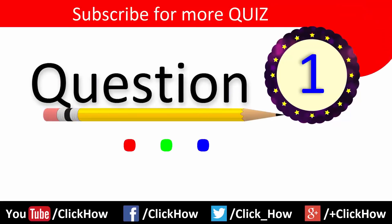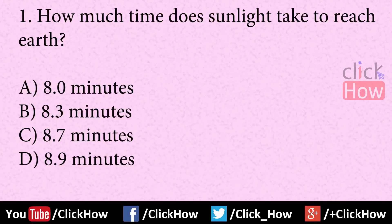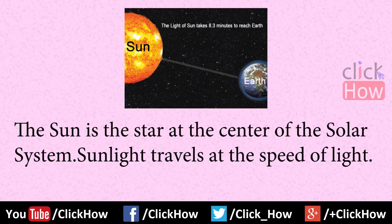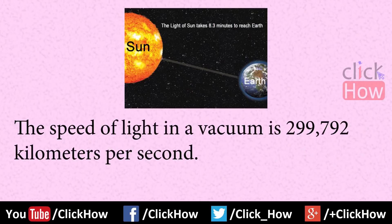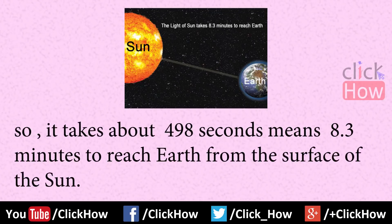Question number 1: How much time does sunlight take to reach Earth? Answer is 8.3 minutes, option B. The sun is a star at the center of the solar system. Sunlight travels at the speed of light, and the speed of light in vacuum is 2,99,792 km per second. So it takes about 498 seconds, meaning 8.3 minutes, to reach Earth from the surface of the sun.